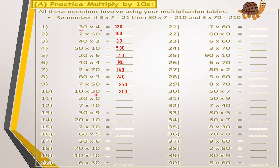For 10 multiplied by 30: multiply 1 by 3 equals 3, then drop down both zeros, giving 300. For 20 multiplied by 0: anything multiplied by zero equals zero, because zero is so strong. For 7 multiplied by 40: 7 by 4 equals 28, drop down the zero, answer is 280.